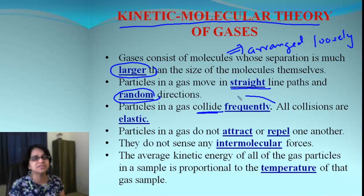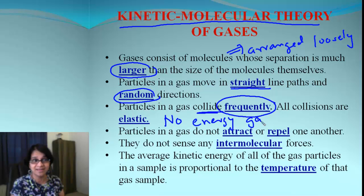Next thing is the particles when they are moving, of course, they bump into other particles. So they end up having collisions. These collisions are extremely frequently taking place. But all the collisions are elastic. What does elastic mean? That means there is no energy gained or lost when this collision takes place.